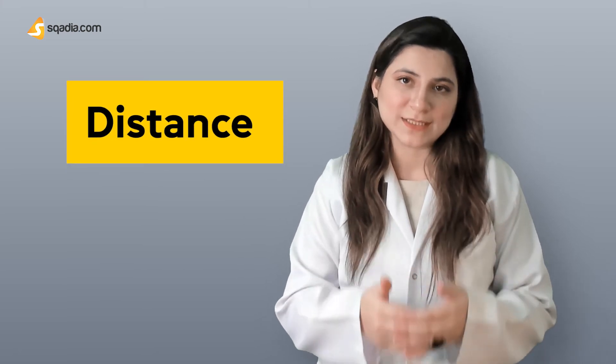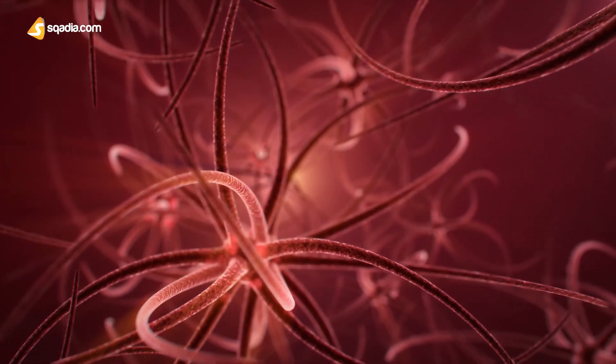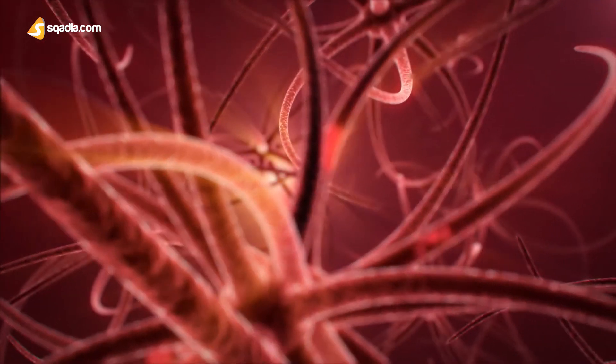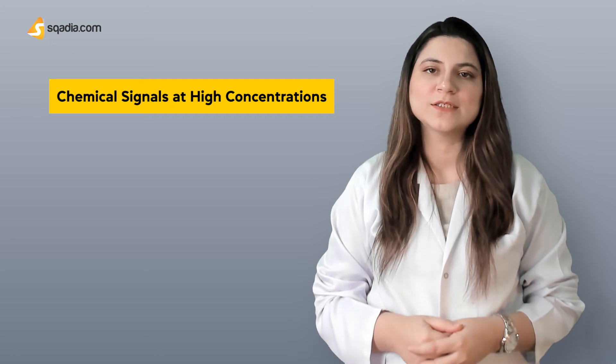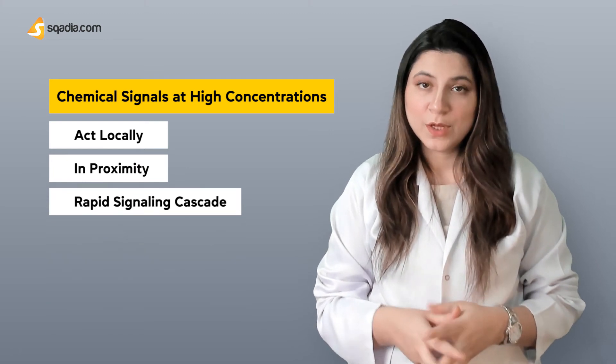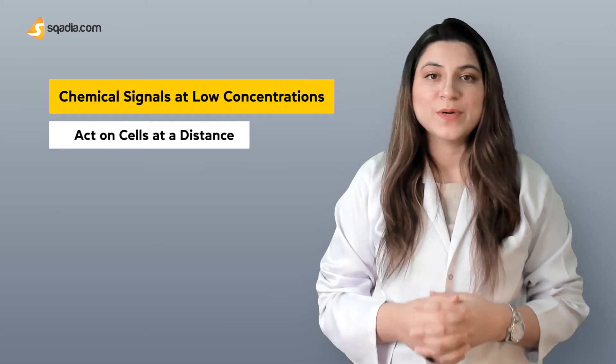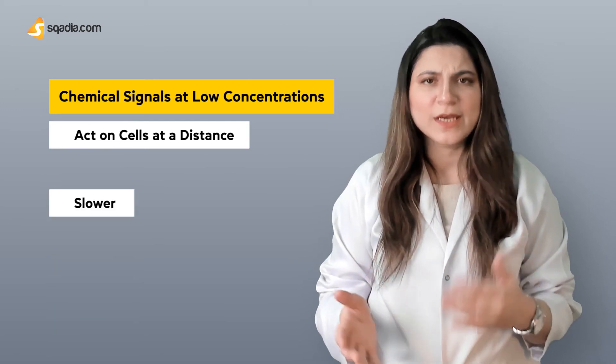We will discuss all of these in detail and also go through some examples to fully understand the role of each type of signaling. One must keep in mind that the main difference between these categories of signaling is the distance that the signal travels to reach its target cell or site. It is also interesting to know that not all cells get affected by the same signal — they are selective in recognizing and responding to various signals that reach them. Chemical signals that act at higher concentrations act locally, in proximity, and have rapid signaling cascades. On the contrary, chemical signals that act at low concentrations act on cells or receptors present at distances and are generally slower.